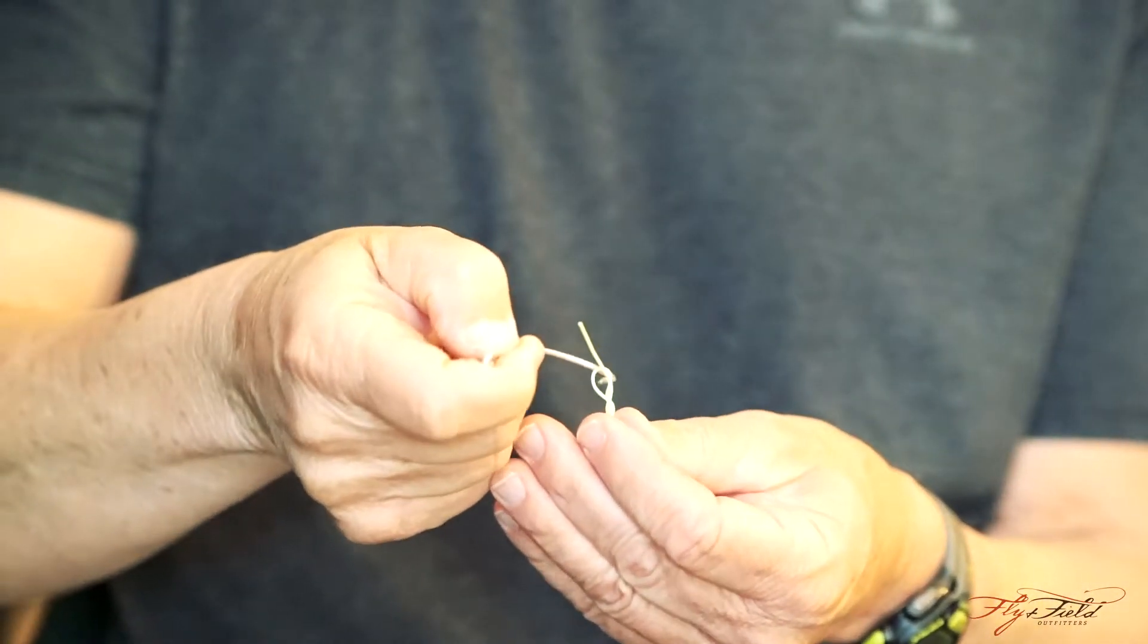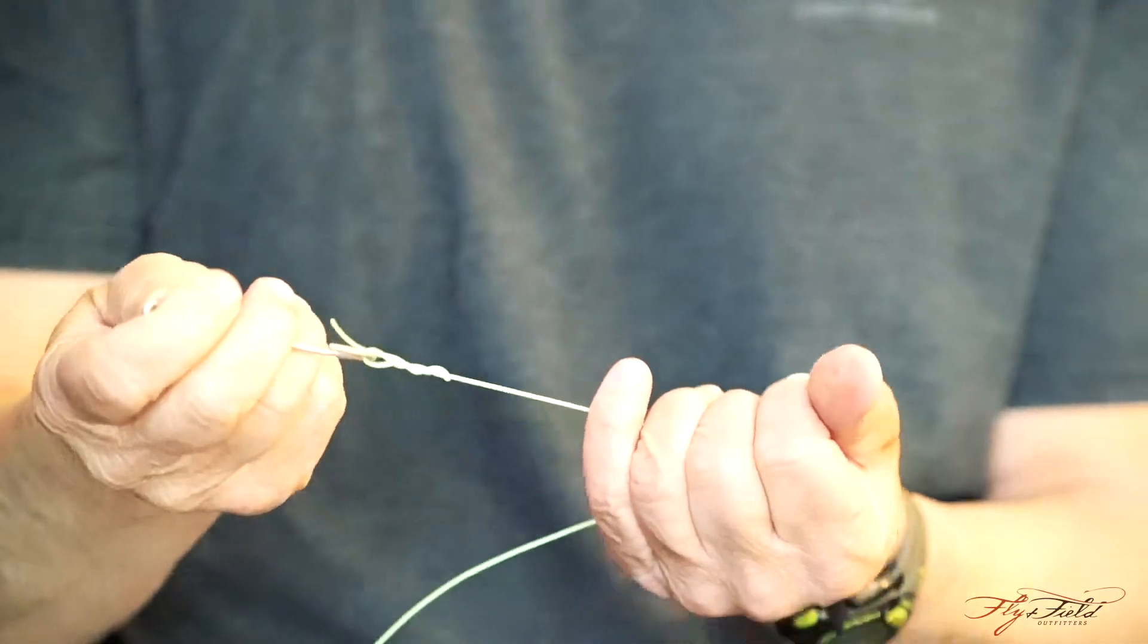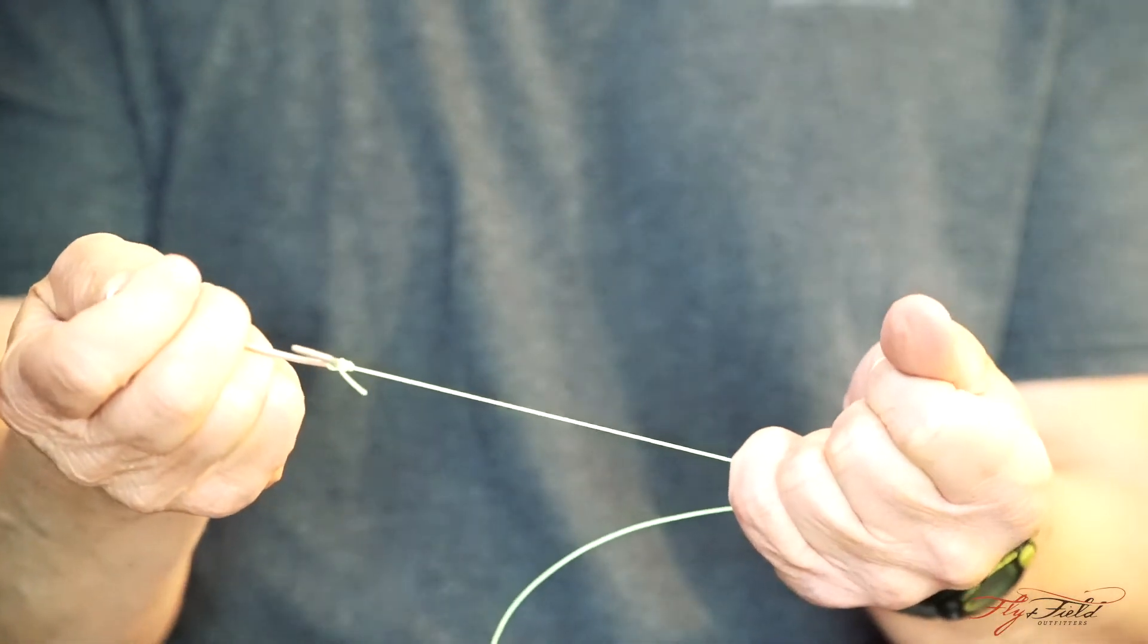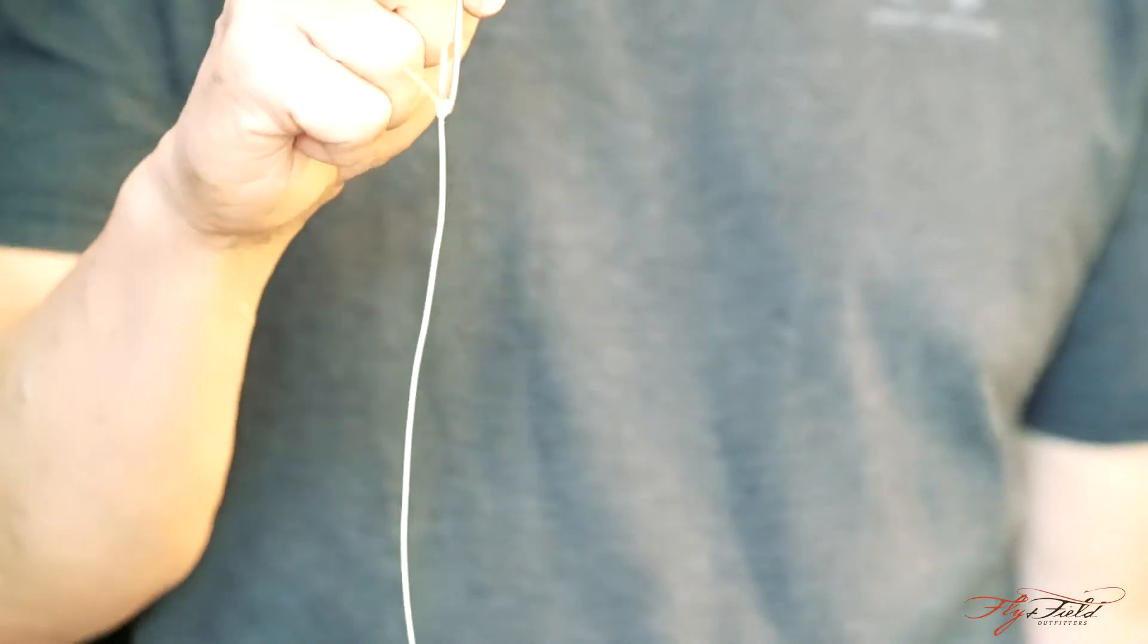Then all you have to do is take the end of your hook, the pointy part of your hook, thread it through there, lick it in case of mono, pull it tight and there's your clinch knot.